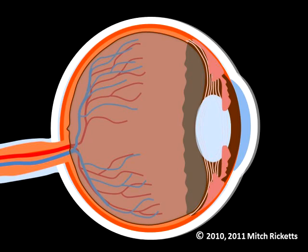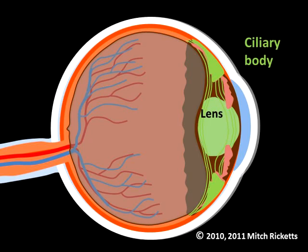Further back, just behind the iris, is a structure called the lens. Like the cornea, the lens is transparent, with no blood supply of its own. It is nourished by the aqueous humor. The lens is connected to the ciliary body by strong fibers. The muscles of the ciliary body change the shape of the lens to help the eye focus on objects that are closer than about 20 feet.